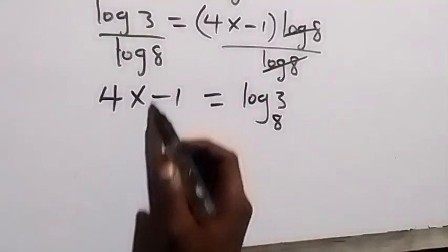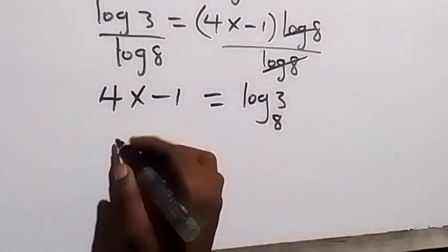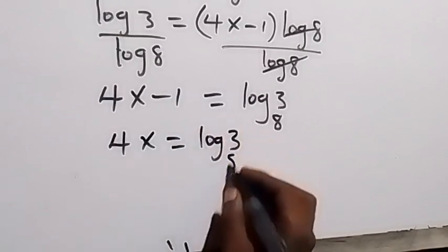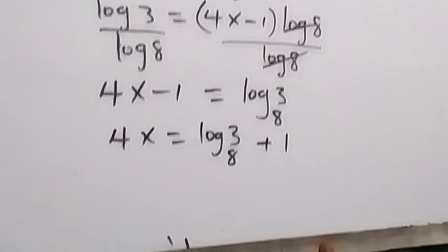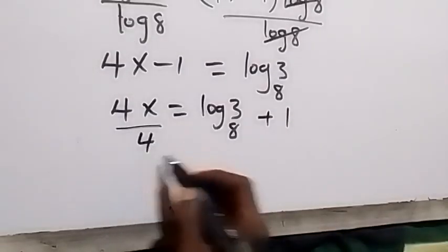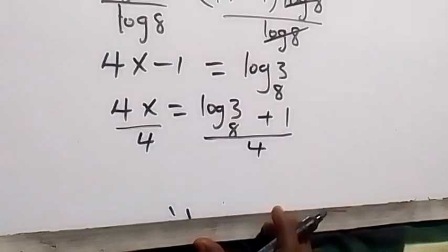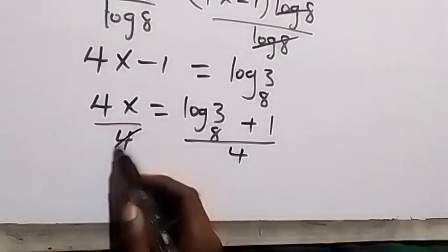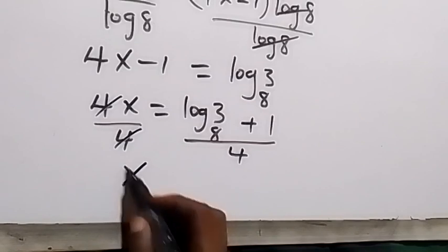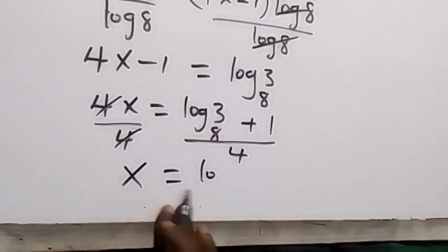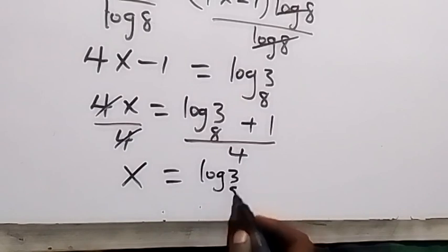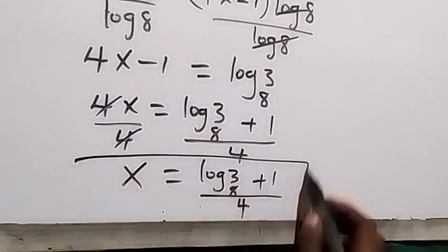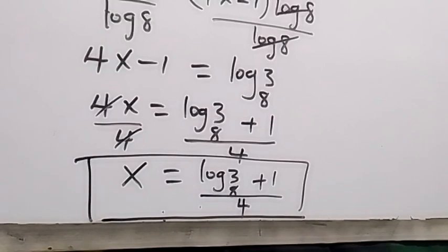We also have minus 1, which we take to the other side, giving 4x equals log 3 base 8 plus 1. Dividing both sides by 4, we get x equals log 3 base 8 plus 1, all over 4. This is the solution to the problem.